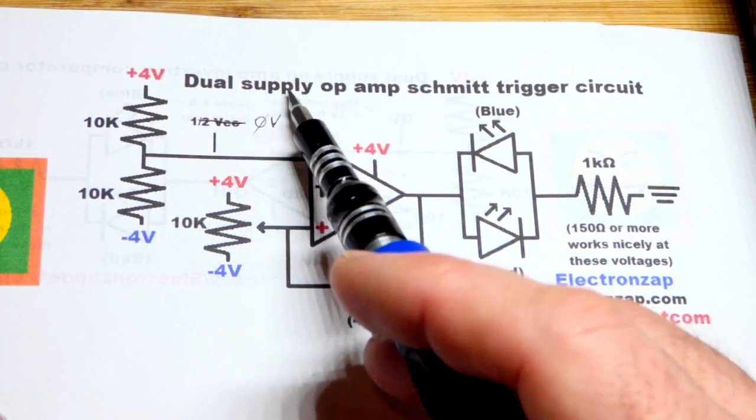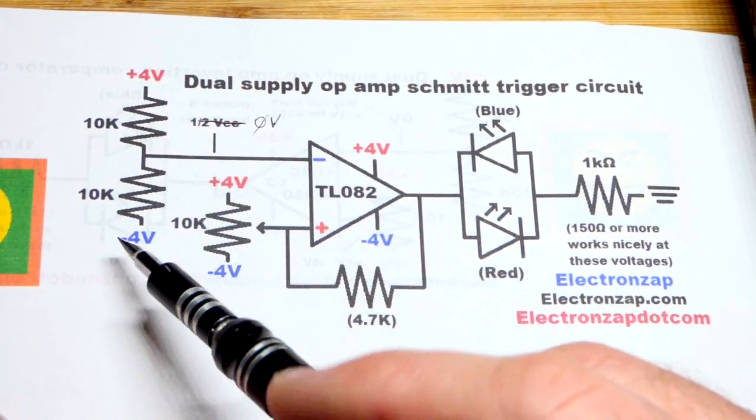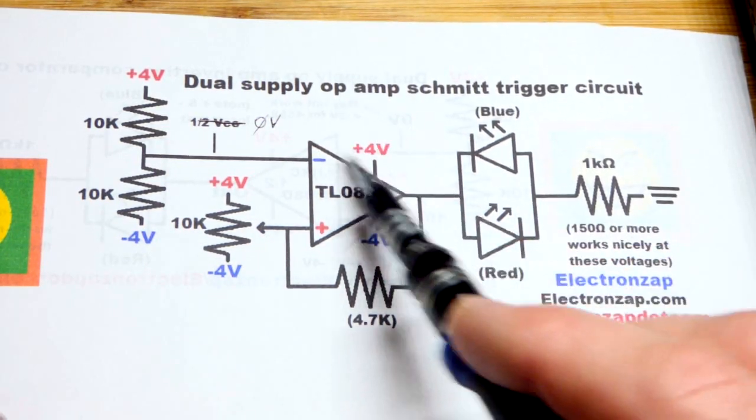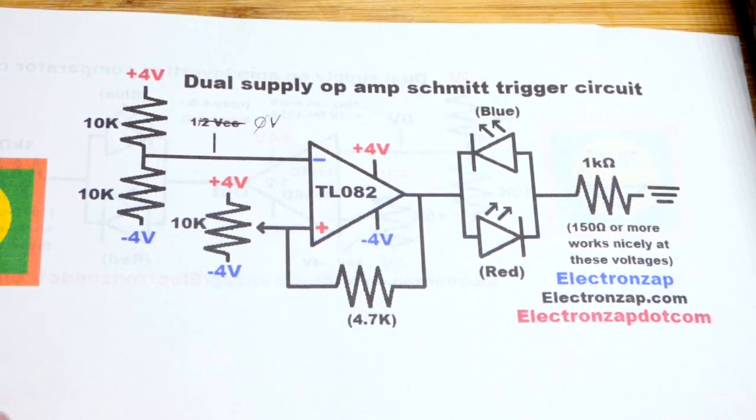Now in this video, we're going to make a dual supply op amp Schmitt trigger circuit. We have a positive voltage and a negative voltage in relationship to ground.